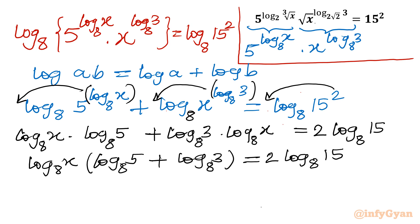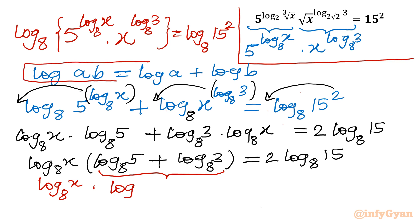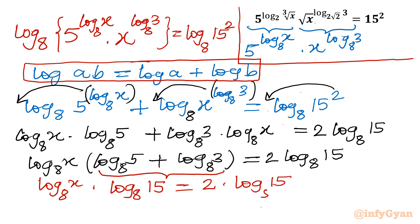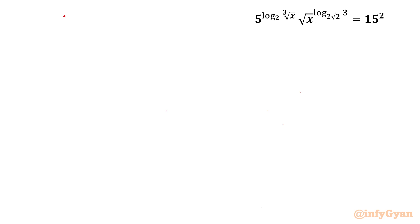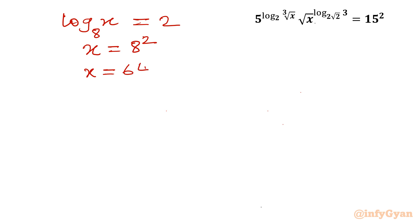We can combine the bracket on the left using log(ab) = log a + log b: log 5 base 8 + log 3 base 8 = log 15 base 8. So the left side becomes log x base 8 · log 15 base 8 = 2·log 15 base 8. Canceling log 15 base 8 from both sides gives log x base 8 = 2, therefore x = 8² = 64 is our answer.